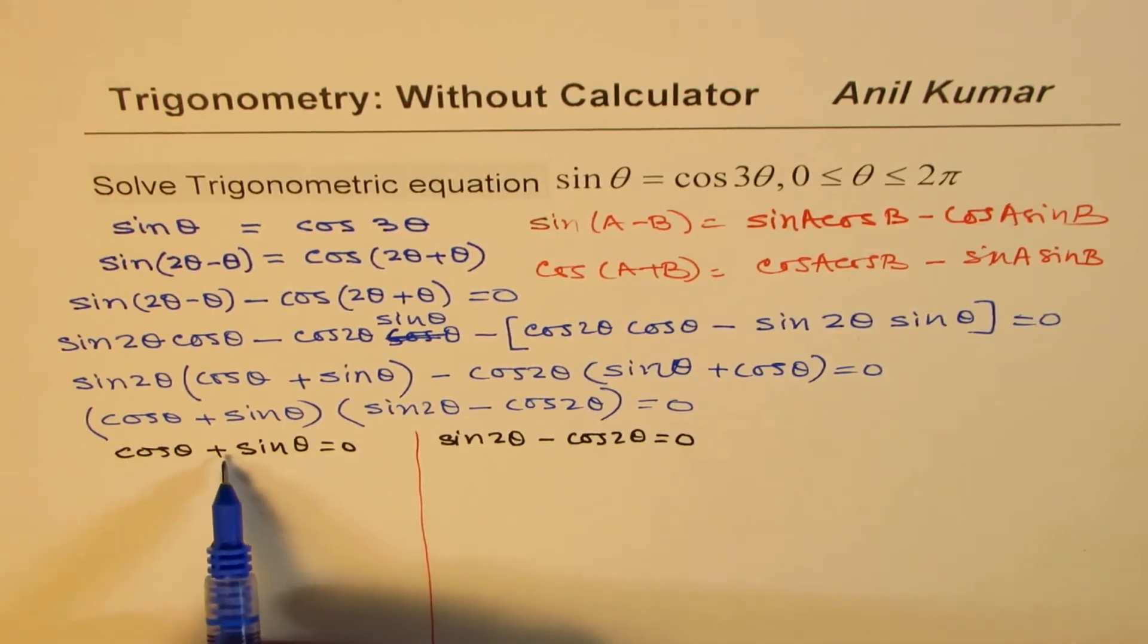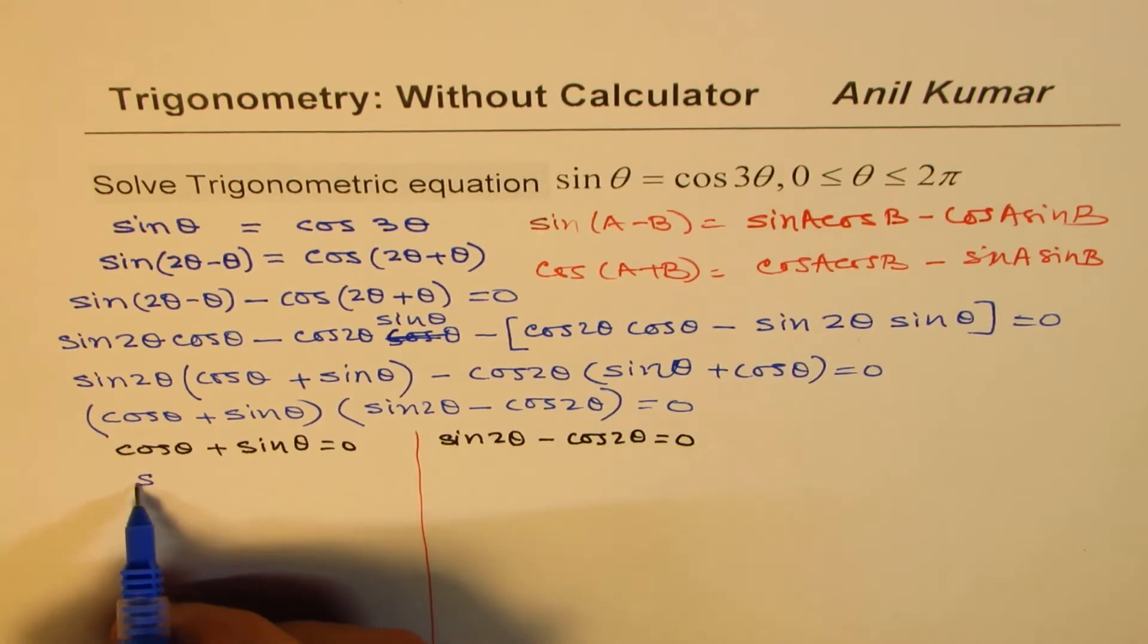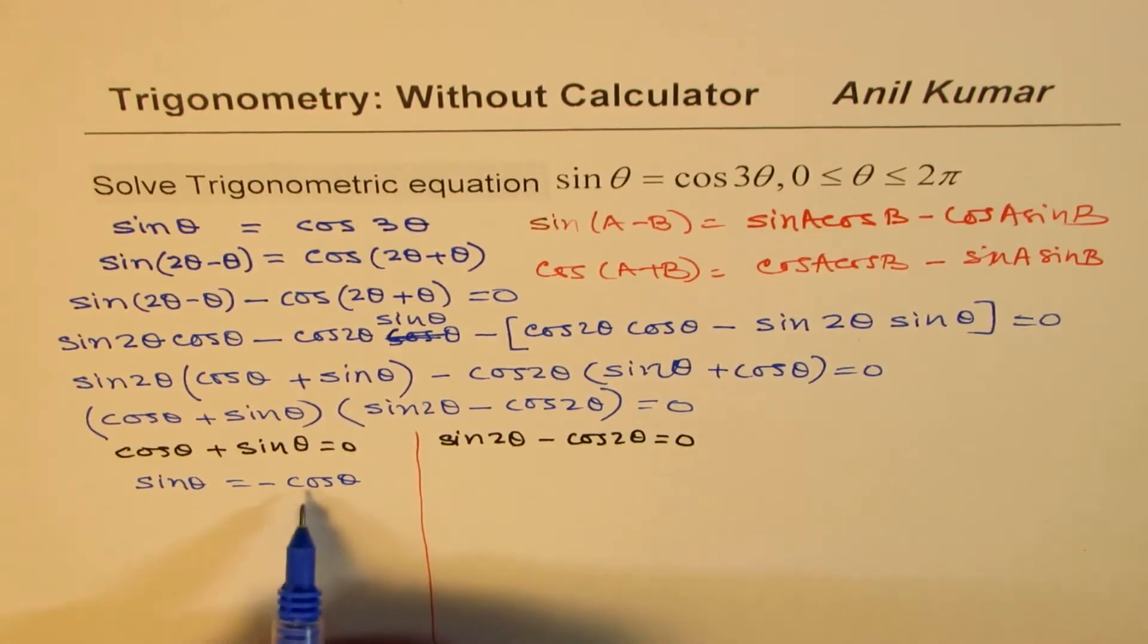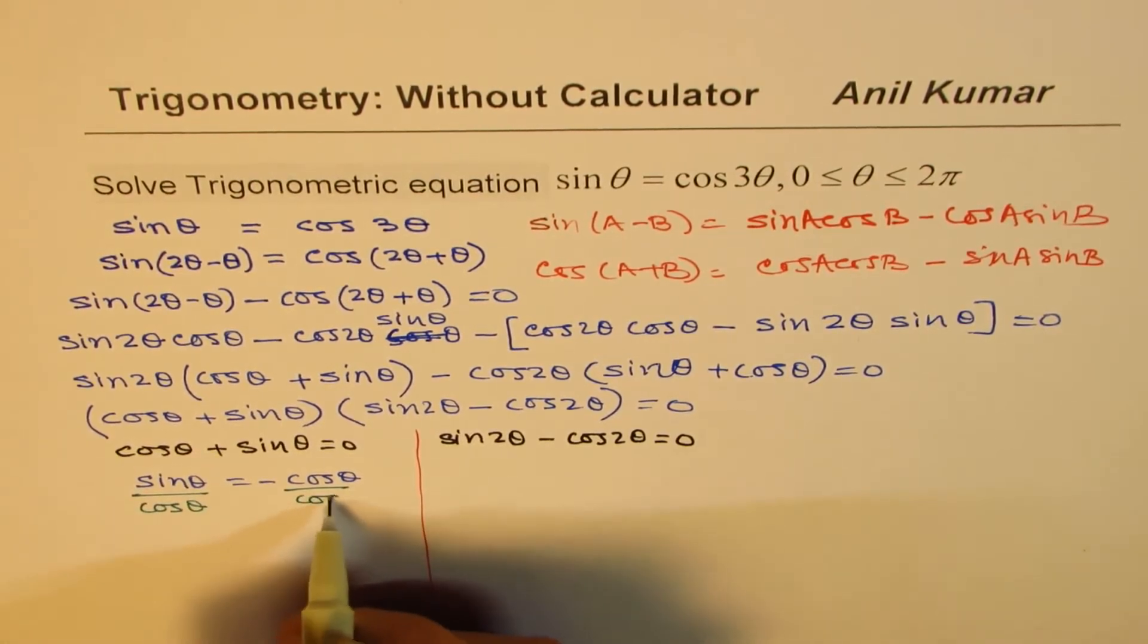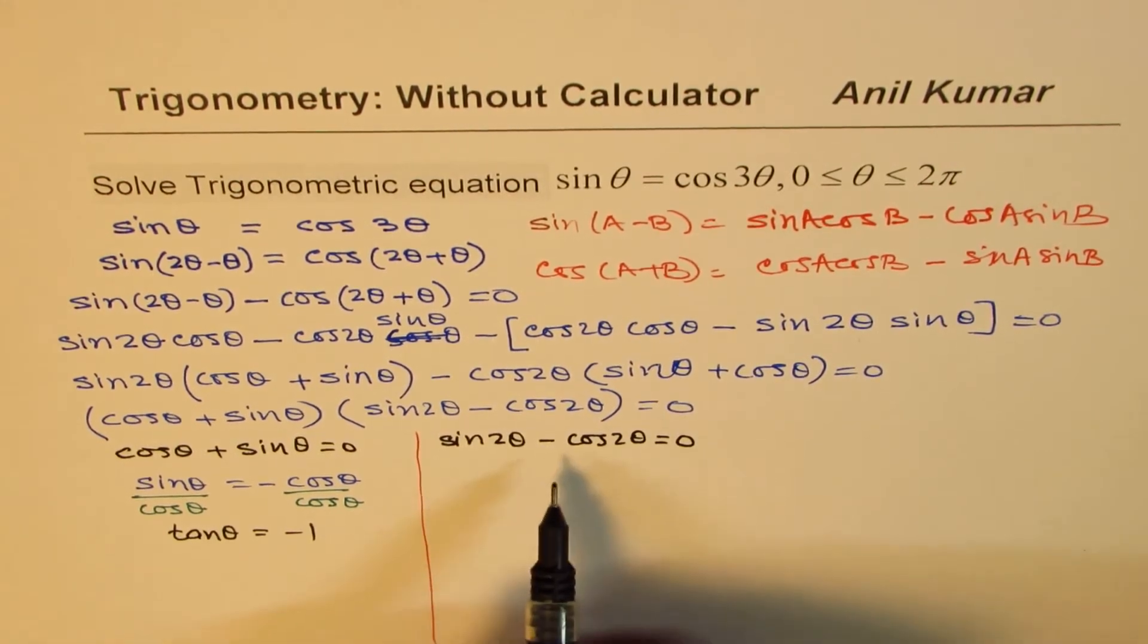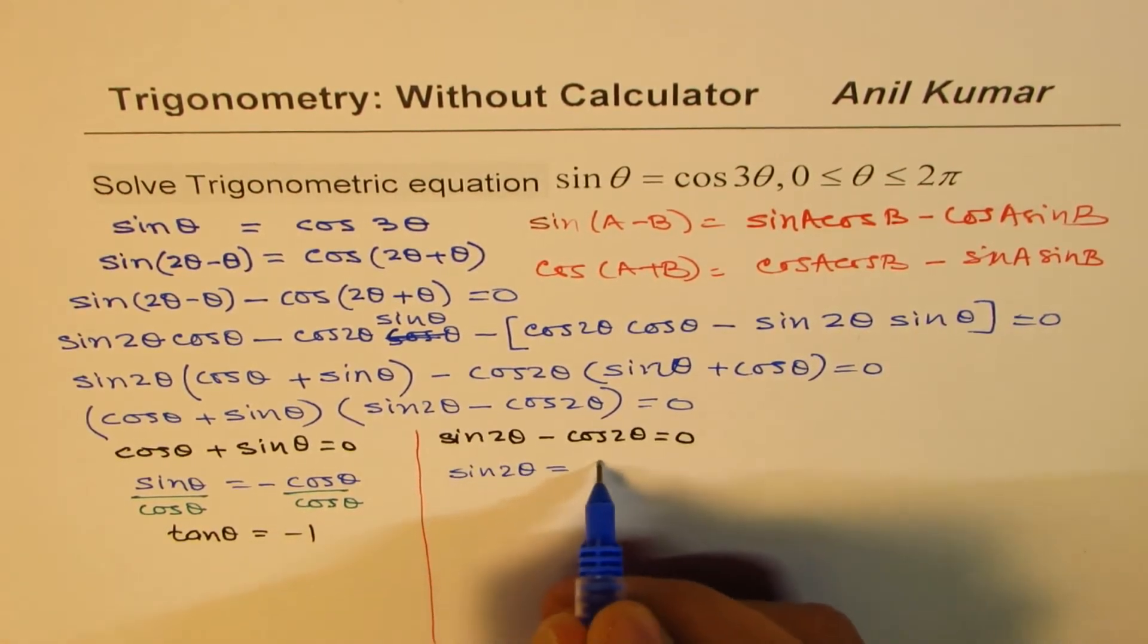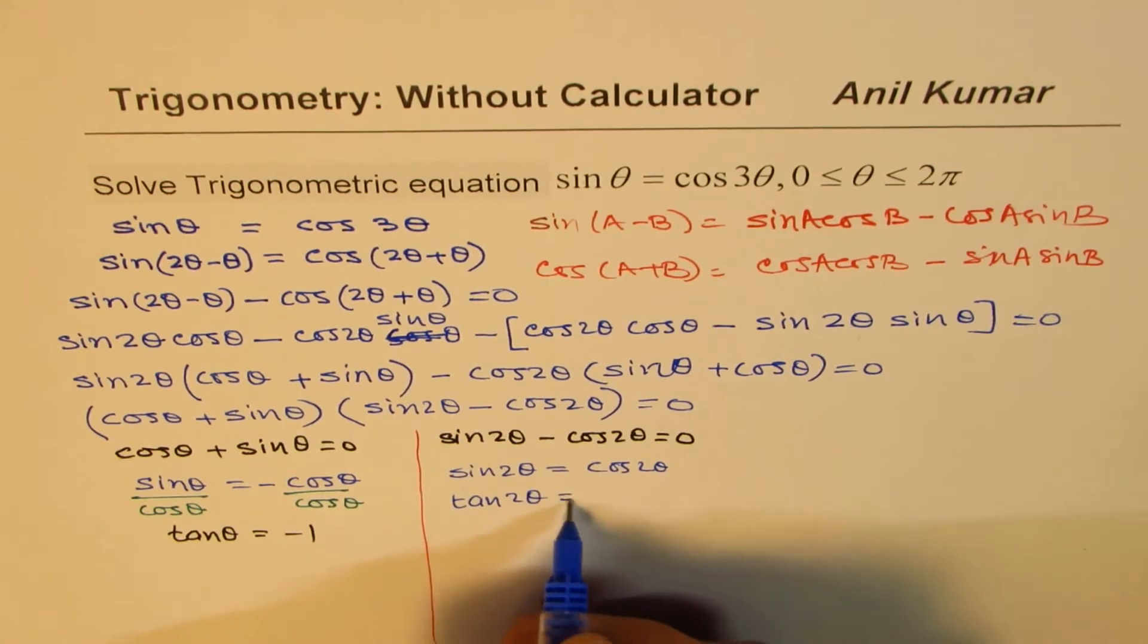From here, we can write sine theta equals minus cos theta. Dividing by cos theta both sides, we get tan theta equals minus 1. And from the other equation, we could write sine 2 theta equals cos 2 theta. Dividing by cos 2 theta, we get tan 2 theta equals plus 1.